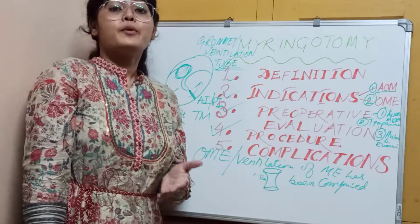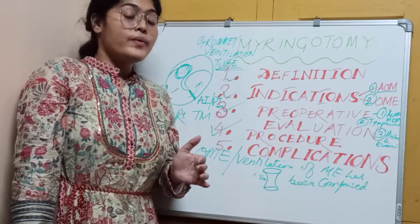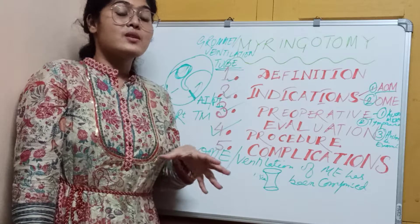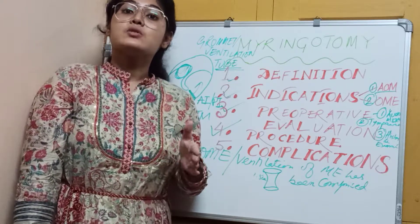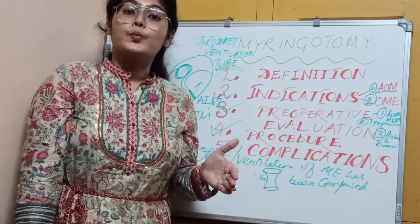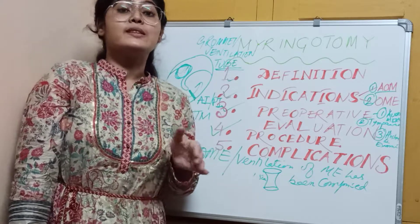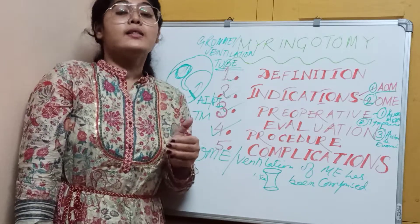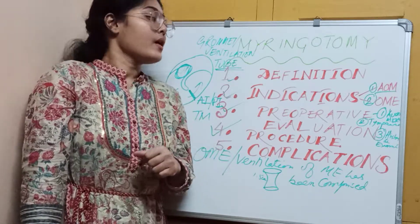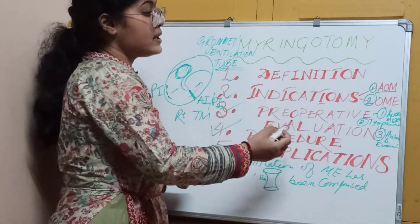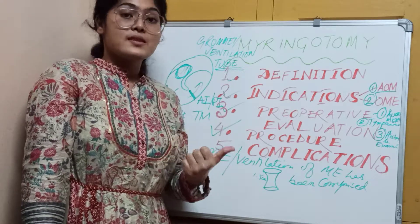We also go for Myringotomy in cases of otitis media with effusion. Associated with Myringotomy is an entity known as a grommet, ventilation tube, or tympanostomy tube. This tube helps in the ventilation and aeration of the middle ear. Mostly in cases of otitis media with effusion, we go for grommet insertion.